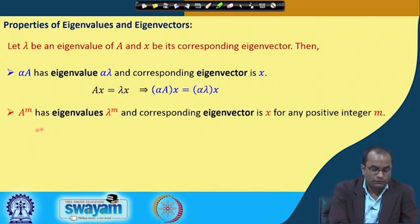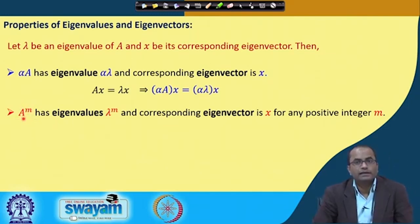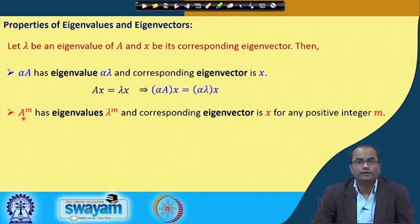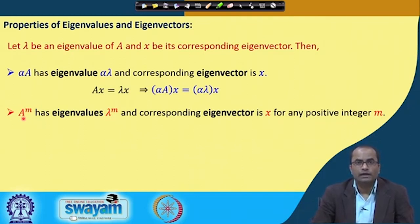Another property: if A to the power m — meaning A multiplied m times — then A^m has eigenvalues lambda^m and the corresponding eigenvector is x again, for any positive integer m. For instance, A squared will have eigenvalue lambda squared with the same eigenvector as A.